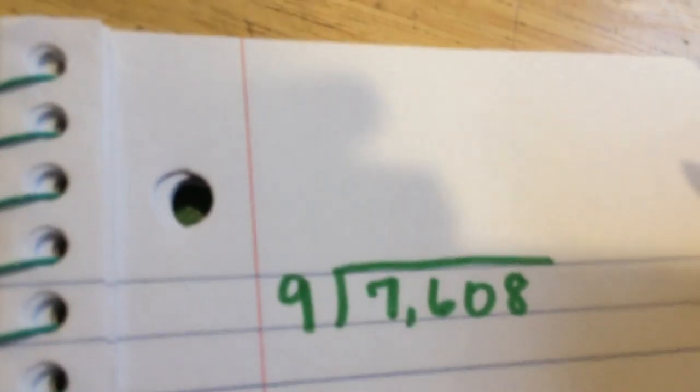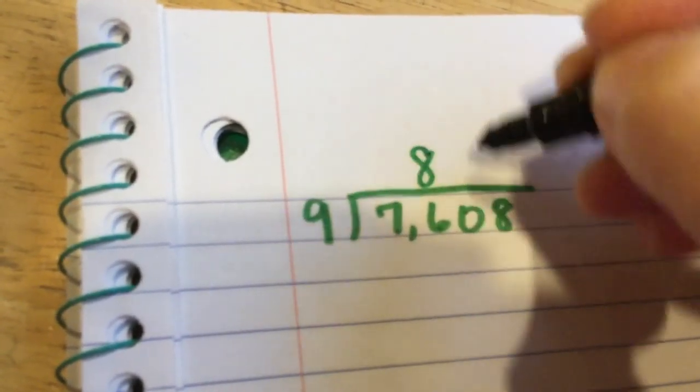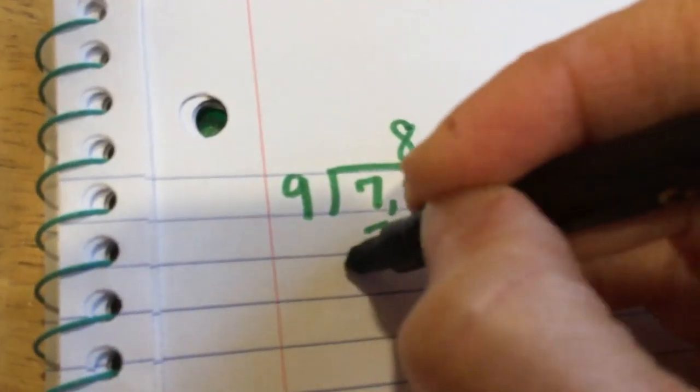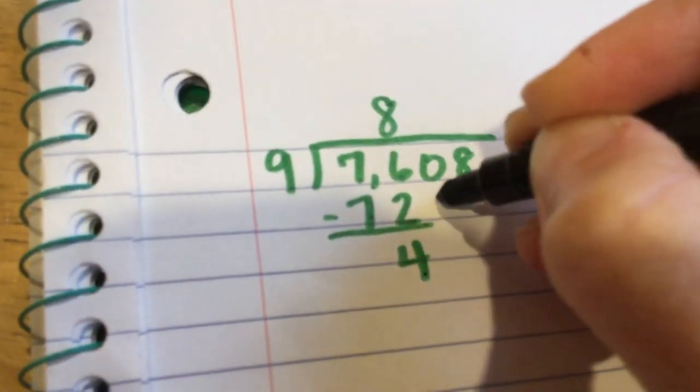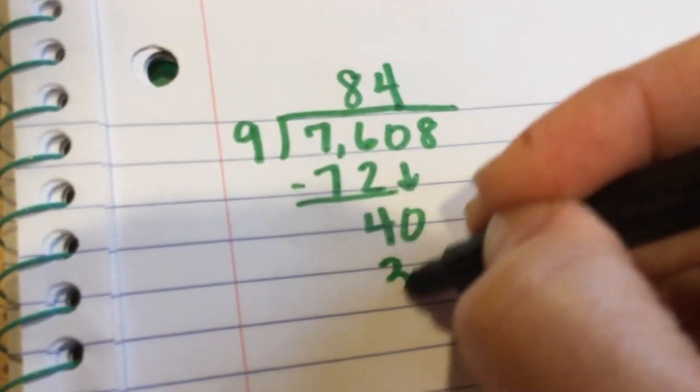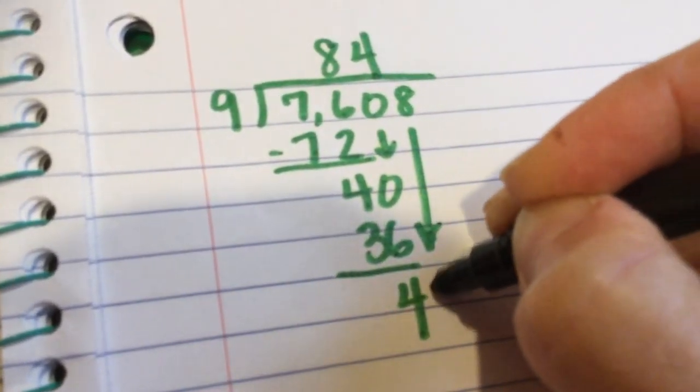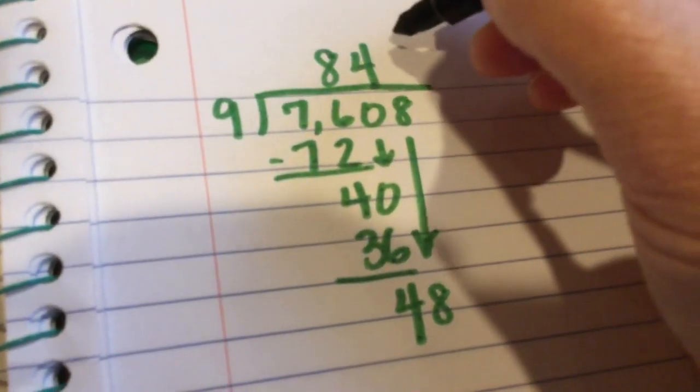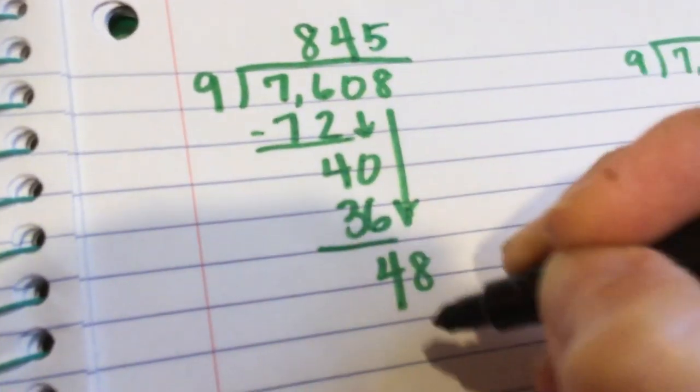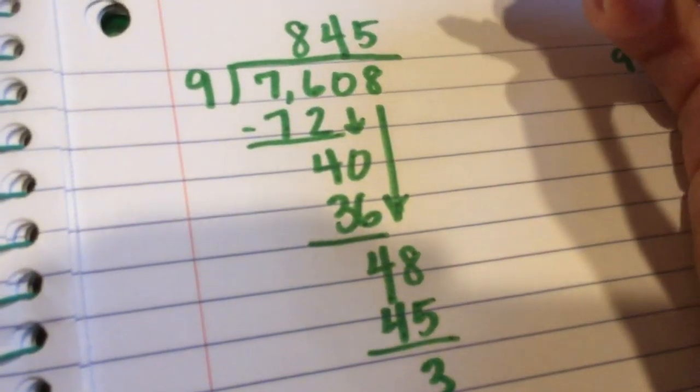I could get in trouble for this one, but I'm gonna get right into it. So typical long division: 9 goes into 76, 8 times, that makes 72. What's left over? 4. Drop down the 0. 9 into 40 goes 4 times, makes 36. What's left over? 4. Drop down the 8. 9 into 48, 5 times, 45. What's left over? 3.